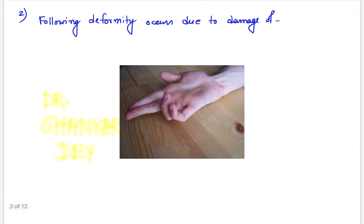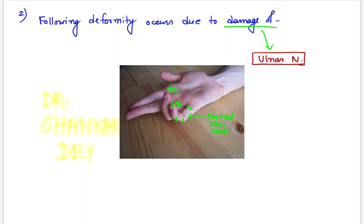Coming to question number 2, this was a very easy question. One hand deformity image was given and they asked what is the mechanism behind this deformity or what nerve is damaged. As you can see, this is nothing but partial claw hand — partial claw hand with clawing of fourth and fifth fingers. There is flexion of proximal and distal interphalangeal joints along with extension of the metacarpophalangeal joint of fourth and fifth digits. This occurs because of damage of the ulnar nerve. So the answer is ulnar nerve damage causes partial clawing of fourth and fifth digits.